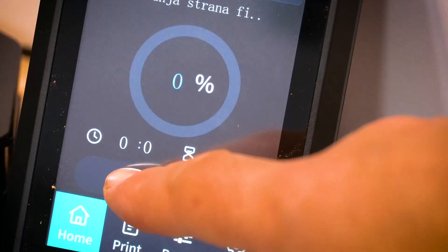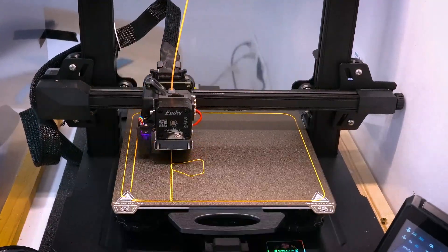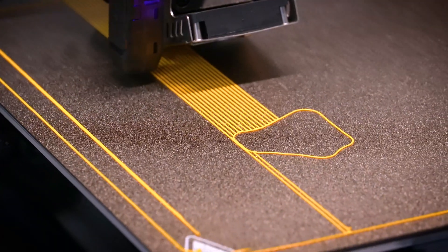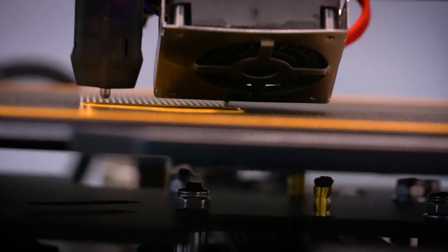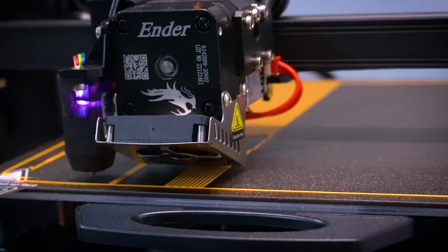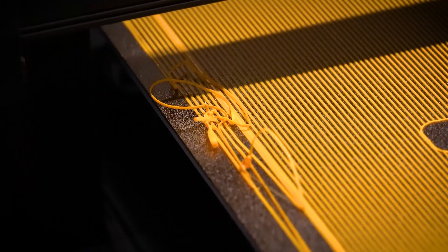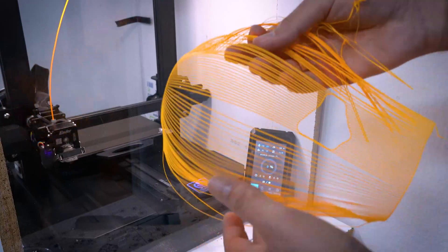Once everything's set, it's time to hit that print button. There were already weird lines. But just as we thought everything was going smoothly, I think I accidentally bumped the table and noticed some strange lines appearing on the print. So let's start all over again with minimum interference.